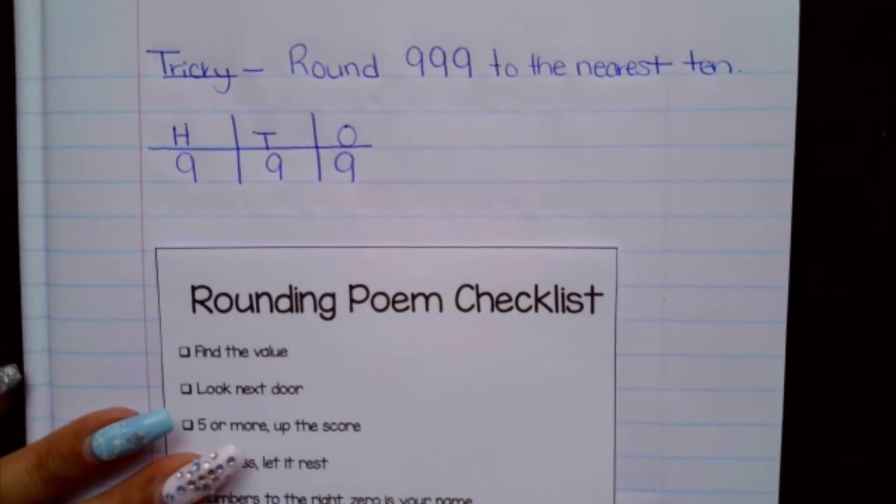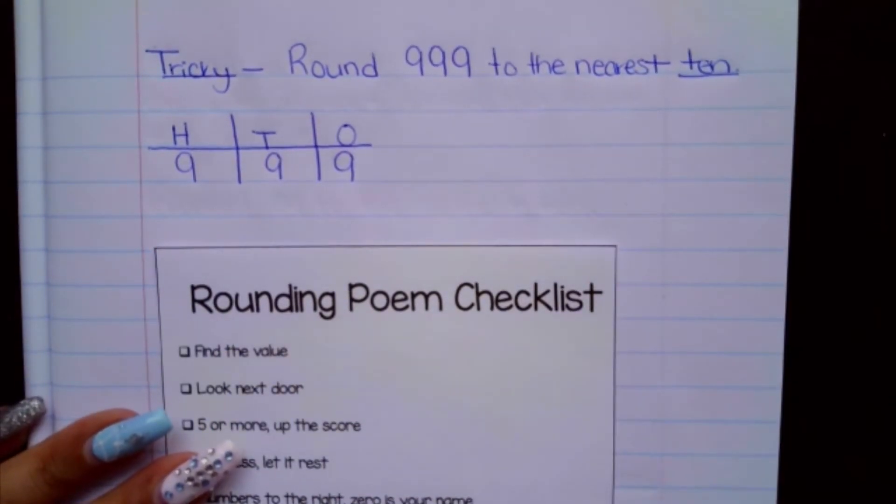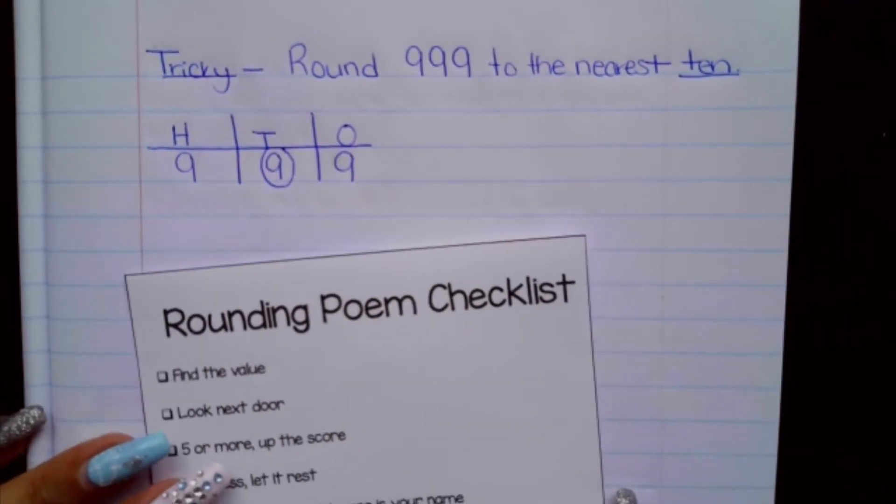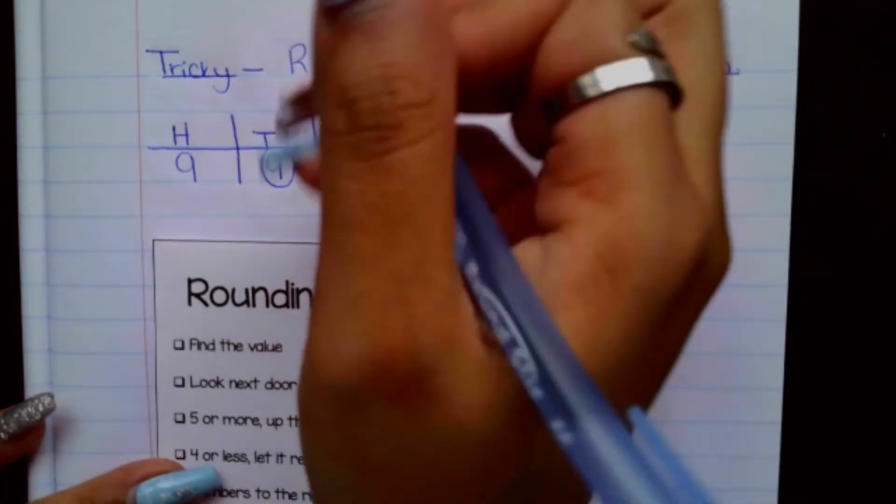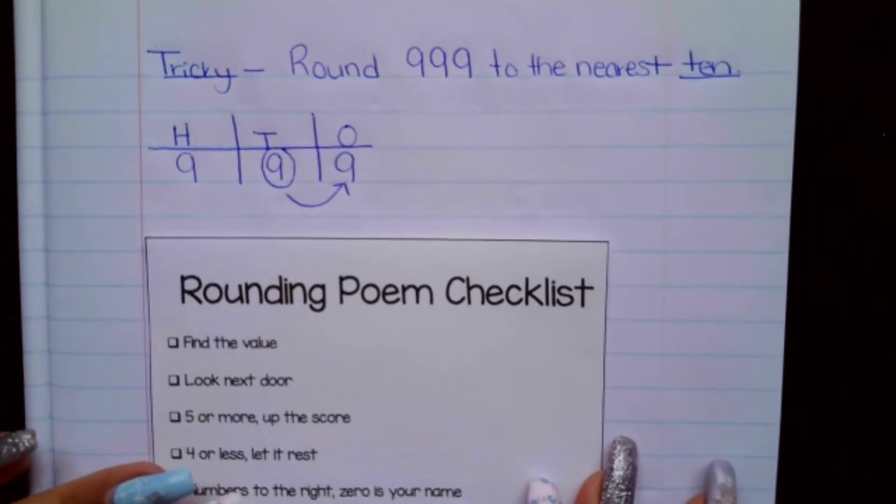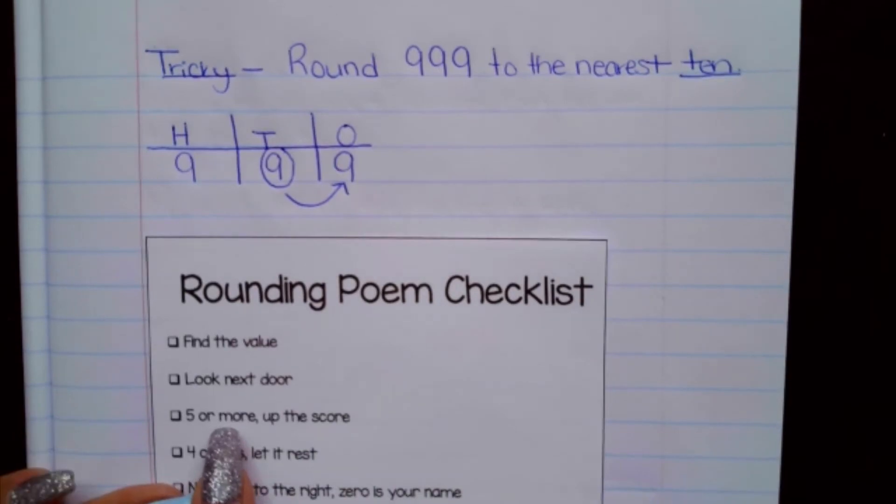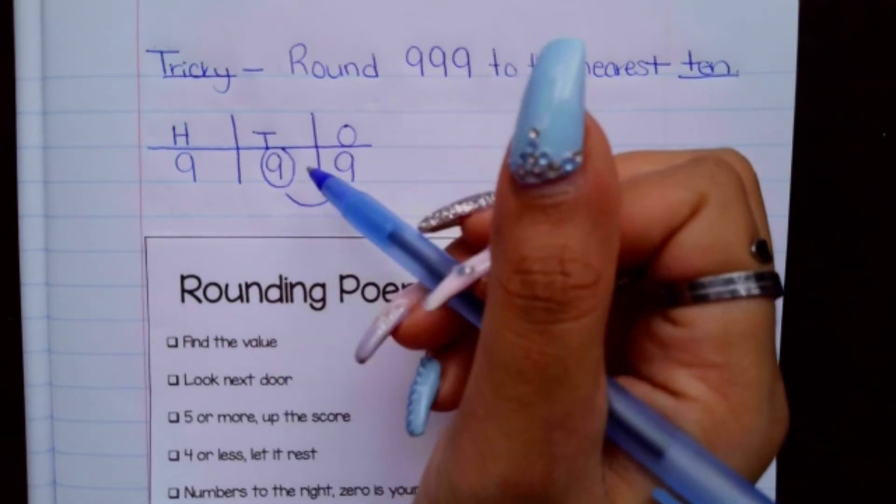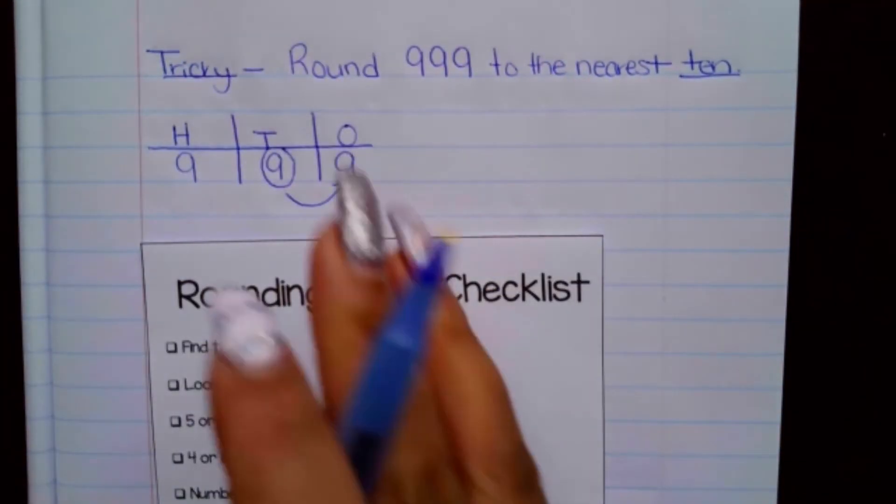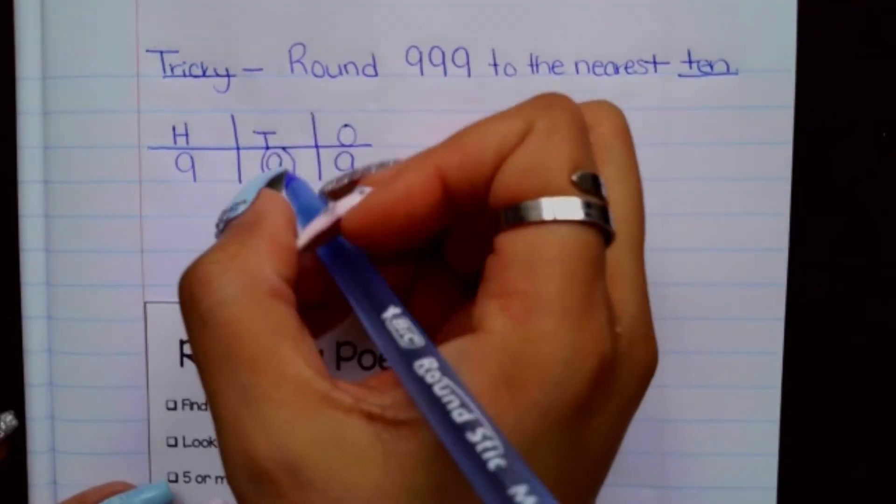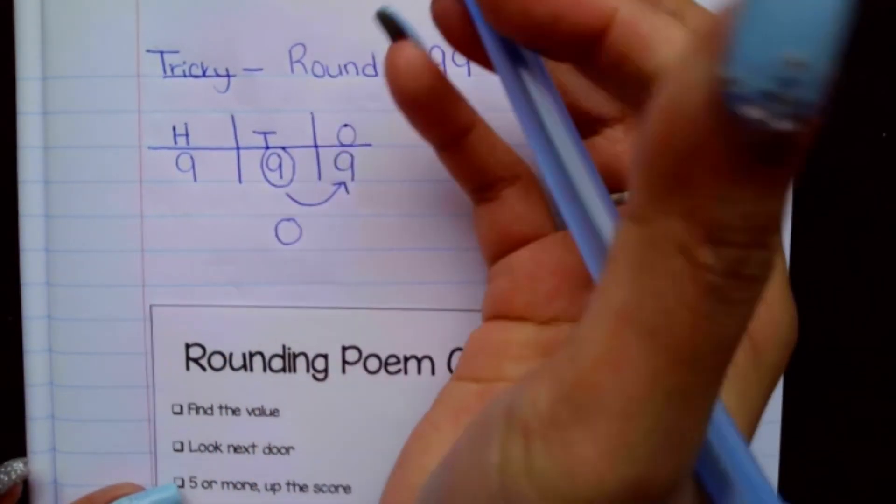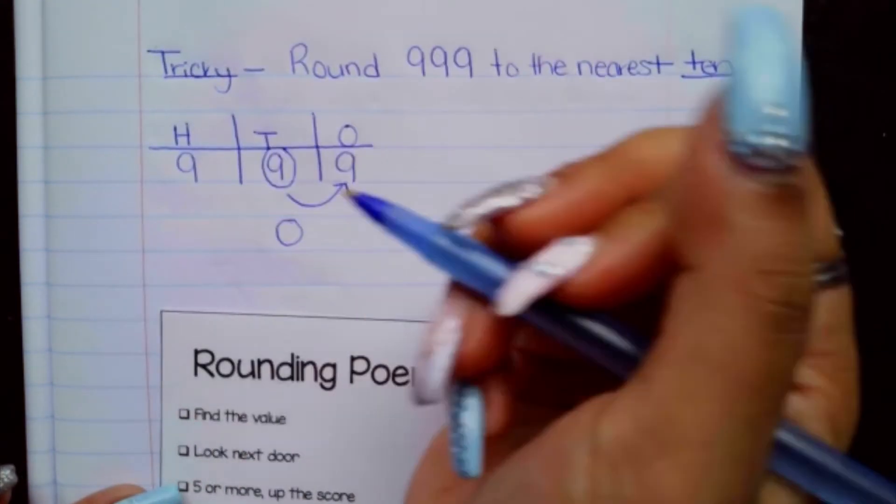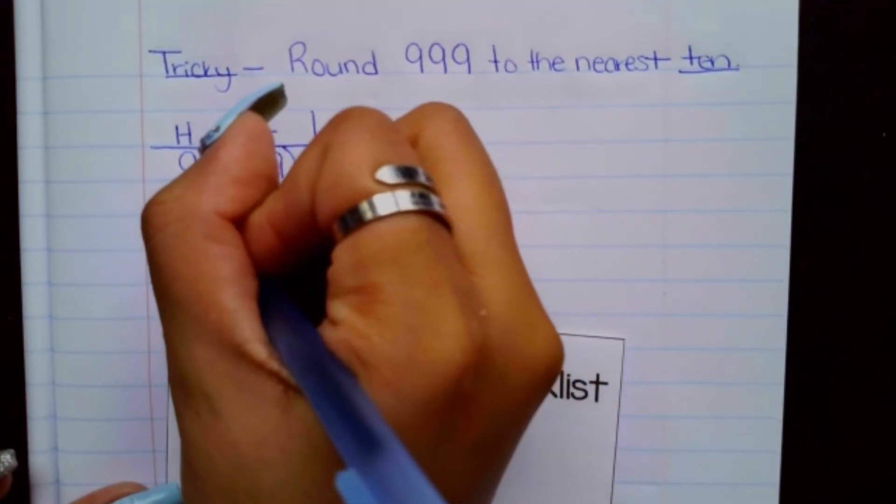So now I'm going to first find my value and I'm rounding to the nearest 10. So the digit nine is my value. Then I'm going to go ahead and look next door. And we have our nine as well. So five or more, we up the score. So that means that this nine, because we're going up ones, it's going to get changed into a 10. And that zero comes here and that one gets added to the nine. So this also gets changed.